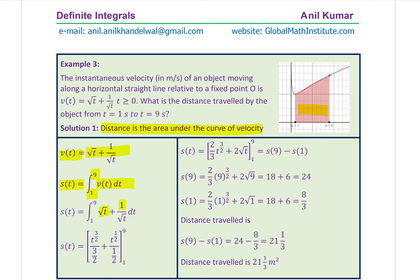Velocity is given as square root t plus 1 over square root t. Integrating gives displacement, and we find the definite integral from 1 to 9 to get the distance traveled. First find the indefinite integral, then apply the limits from 1 to 9. Simplifying, we have 2 over 3 times t to the power of 3 over 2 plus 2 square root t. We evaluate from 1 to 9 — find the value of s at 9 and take away the value of s at 1.